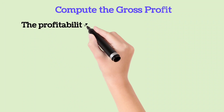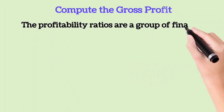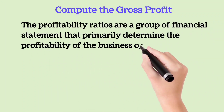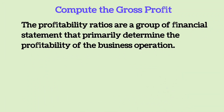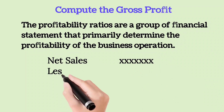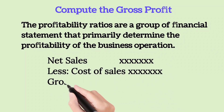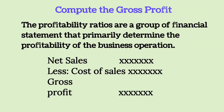Compute the Gross Profit. The profitability ratios are a group of financial statements that primarily determine the profitability of the business operation. The formula of gross profit is: net sales less cost of sales equals gross profit.